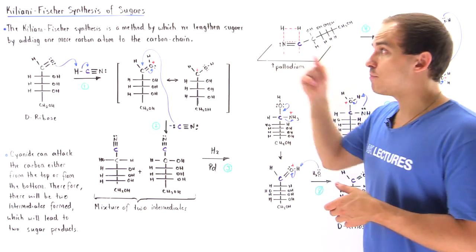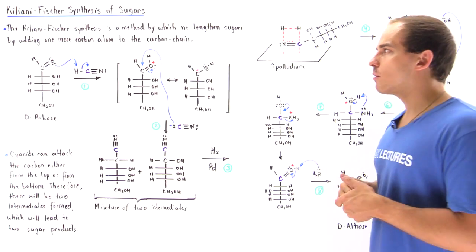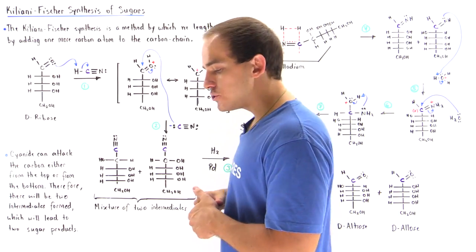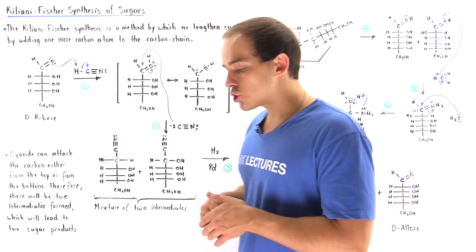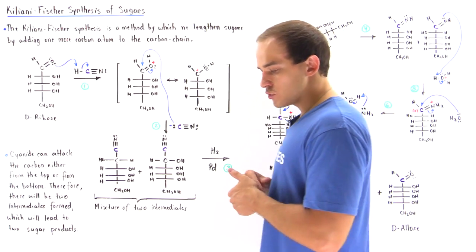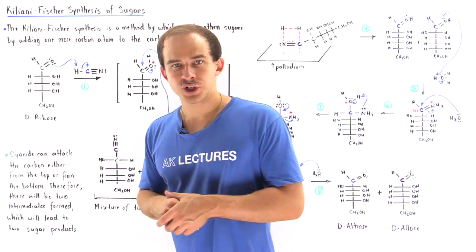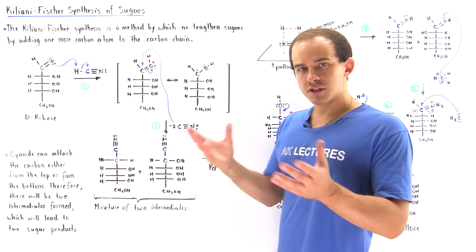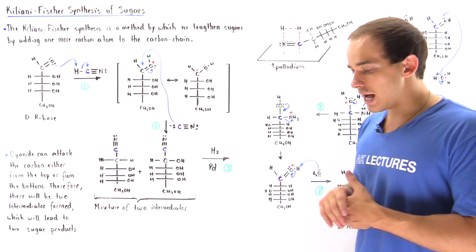We basically increase the length by adding one more carbon atom to our carbon chain inside any given sugar molecule. There are two types of Kiliani-Fischer synthesis reactions: the old version and the newer version. In this lecture, we're going to focus on the newer version.